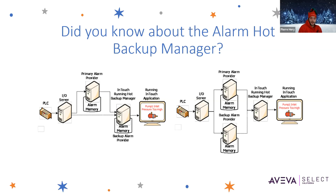The Hot Backup Manager synchronizes alarm acknowledgements between the primary and backup providers. So if you acknowledge the alarm on one, it'll be acknowledged on the other as well. The advantage to using the configuration on the right is that if the primary alarm provider fails, you have a backup one. The Alarm Consumer will still receive alarms from the backup, and will still reference the Hot Backup pair, so the backup provider will provide the alarm data at that point.